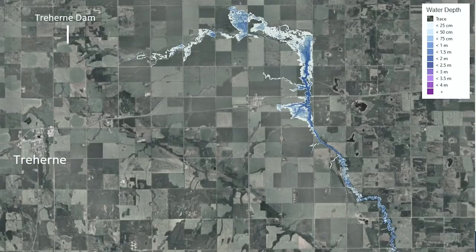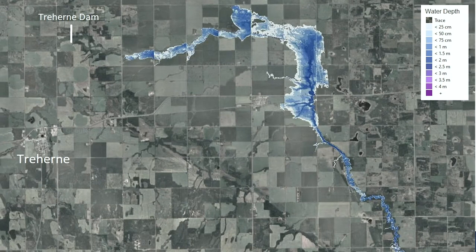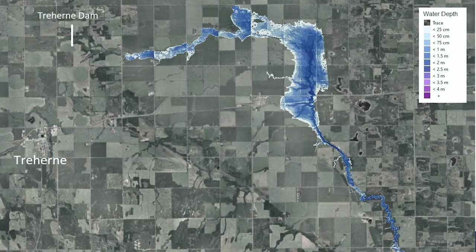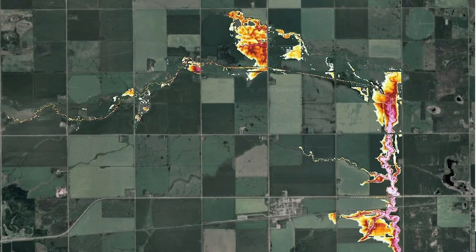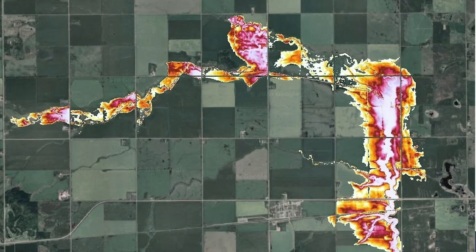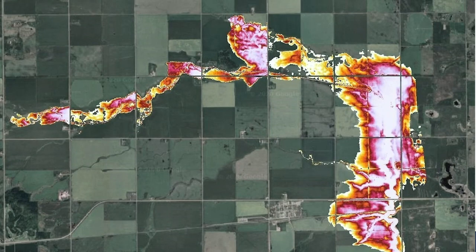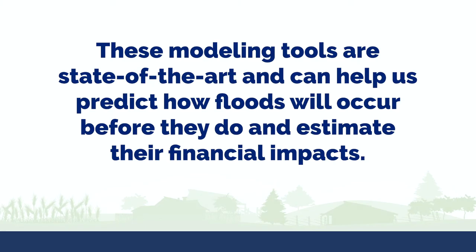We do this for clients using LIDAR, geographic information systems, and flood risk modeling software. We use WDPM, Telemac, and high-performance cloud computing to harness the full power of the high-quality, high-resolution LIDAR data available within Manitoba. These modeling tools are state-of-the-art and can help us predict how floods will occur before they do and estimate their financial impact.